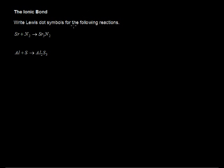In this video, I'll write Lewis dot symbols for a couple of reactions that result in ionic bonds. The ionic bond is where we have a transfer of electrons, so losing electrons from one atom and gaining electrons on another element. When you lose or gain electrons in an atom, that forms an ion, therefore it is called an ionic bond.